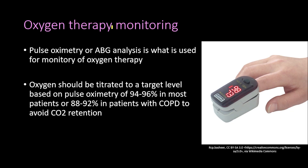Oxygen therapy is monitored by pulse oximetry or arterial blood gas analysis. Oxygen should be titrated to a target level of 94 to 96 percent in most patients, or to a target level of 88 to 92 percent in patients with chronic obstructive pulmonary disease to avoid carbon dioxide retention.